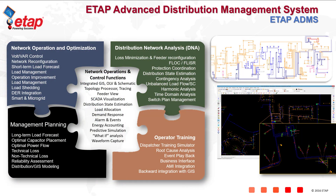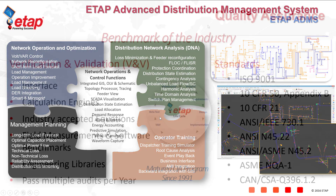Finally, ETAP includes an integrated Advanced Distribution Management System. ETAP ADMS includes network operation and optimization engines, management planning applications, network operations and control functions, various DNA (Distribution Network Analysis) applications, as well as an integrated dispatcher or operator training simulator.